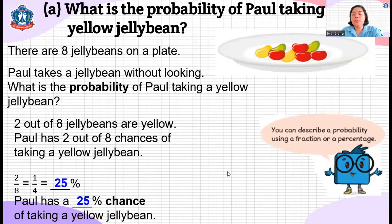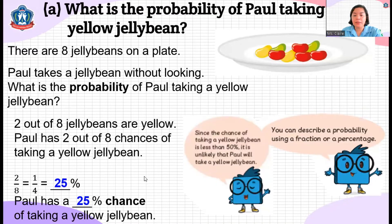To describe the probability, we can use a fraction or a percentage. If the chance of taking a yellow jelly bean is less than 50%, it is unlikely that Paul will take a yellow jelly bean.